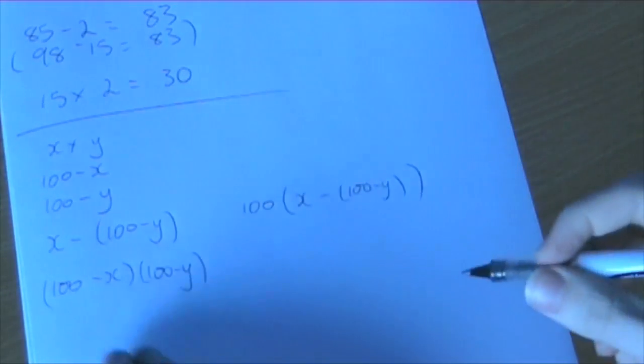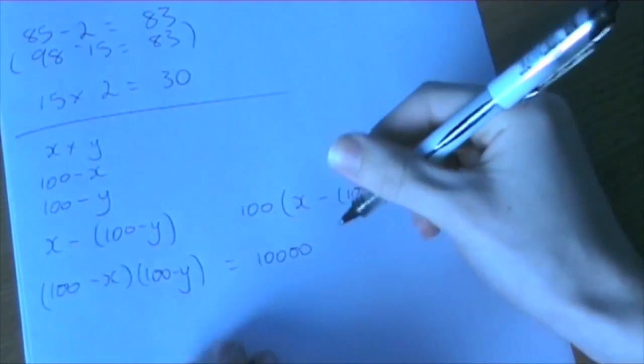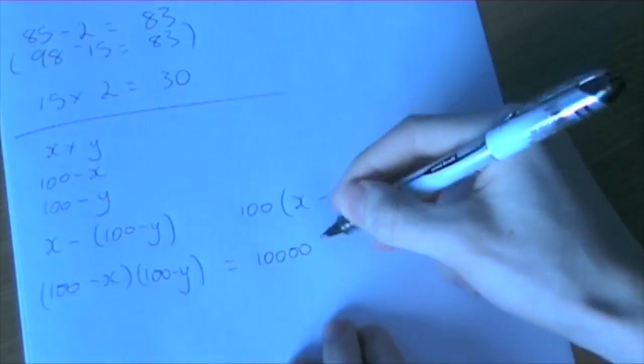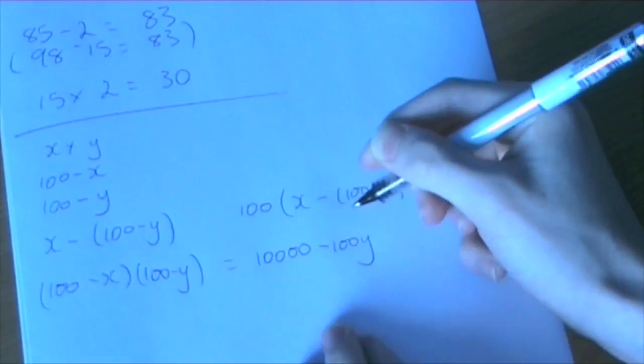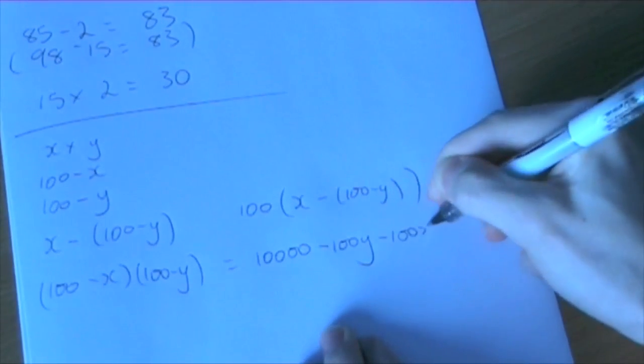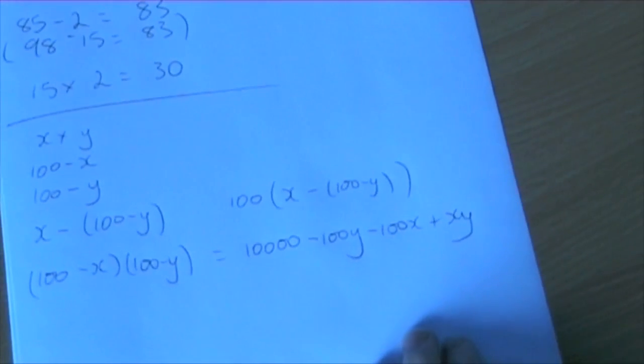Now if we expand this, we get 100 times 100, which is 10,000. 100 times minus y would be minus 100y. Minus x times 100 would be minus 100x. Minus x times minus y gets us plus xy on the end.